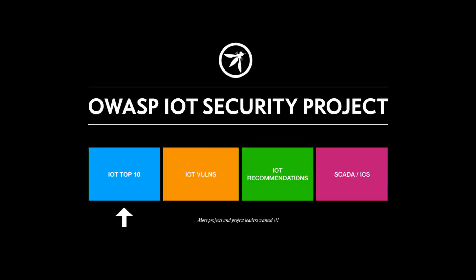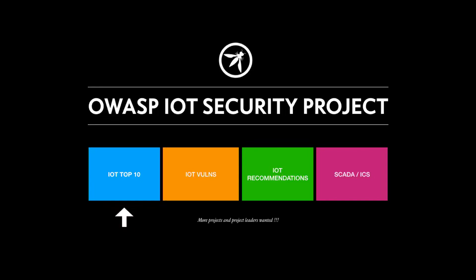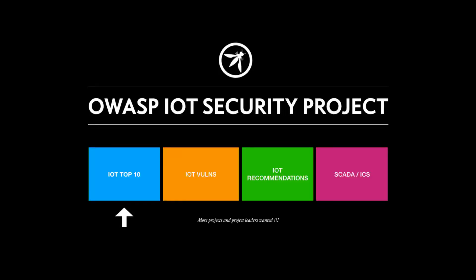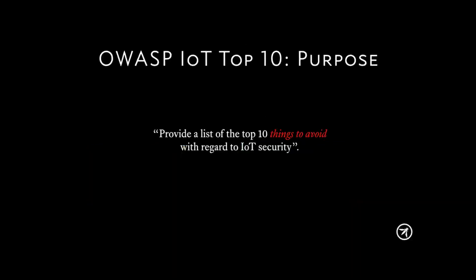The IoT security project is basically an umbrella of different projects. There's lots of different ones. The IoT Top 10 is the one I'm specifically talking about today, but there are other projects like General IoT Vulns, IoT recommendations, a separate project just for IoT related to SCADA and ICS, and also a reference architectural project where you actually design what it should look like — because the problem with these types of projects is you show people what they shouldn't do, and they say, what should I do? So that would be a really nice project to have.